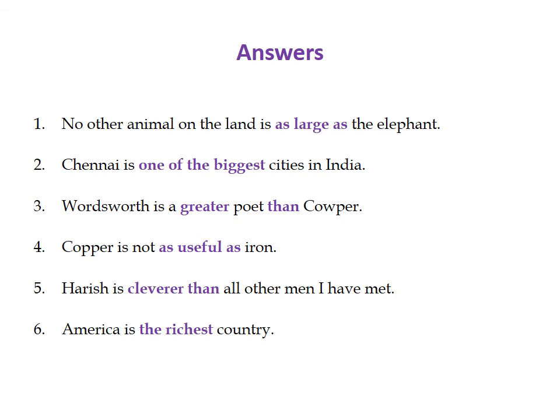For sentence four, we change to positive degree. We say 'Copper is not as useful as iron.' We don't use 'more useful' or 'most useful' — we simply use 'useful,' with 'as' placed before and after it.